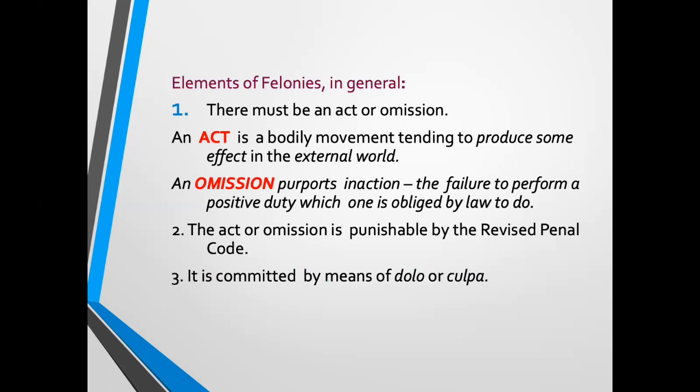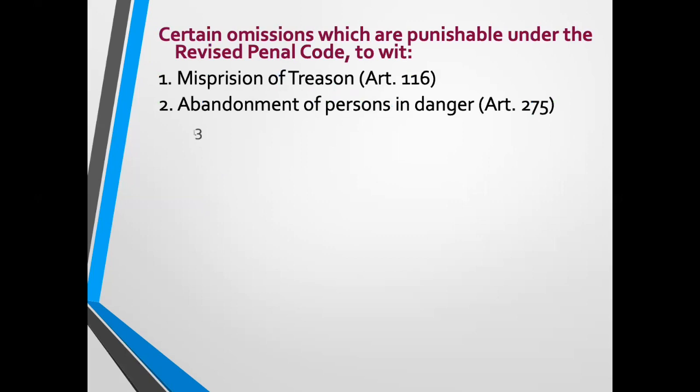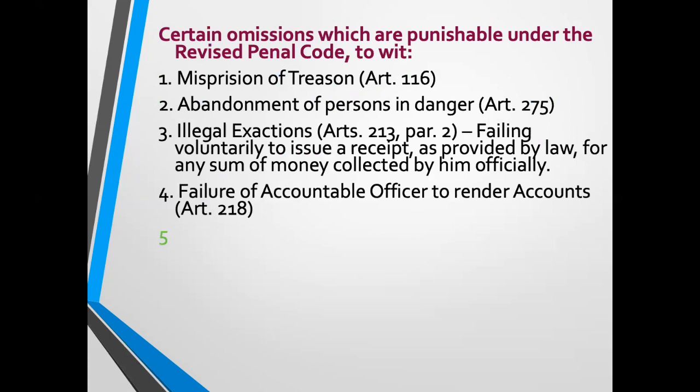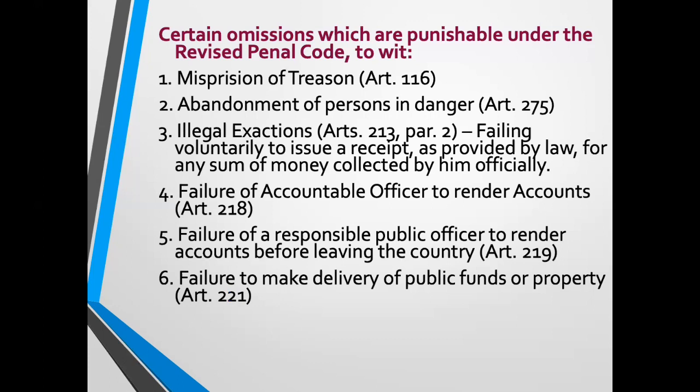The third element is that the act or omission is committed by means of dolo or culpa. Examples of certain omissions include misprision of treason, abandonment of persons in danger, illegal exactions, failure of an accountable officer to render accounts, failure of a responsible public officer to render accounts before leaving the country, failure to make delivery of public funds or property, and unprivileged communication under Rule 130.